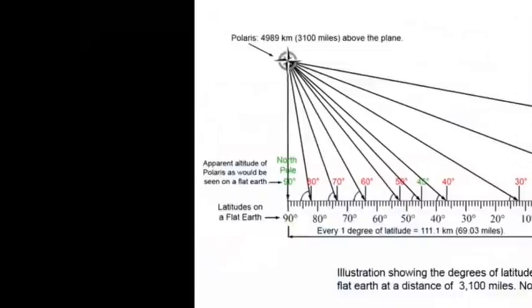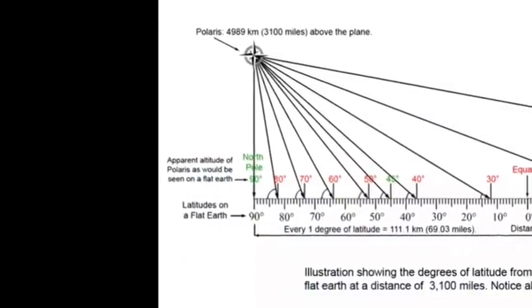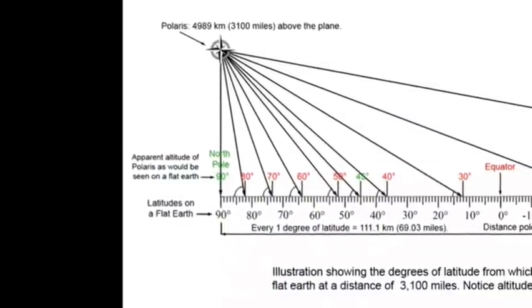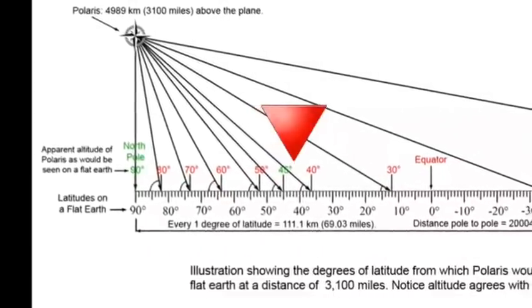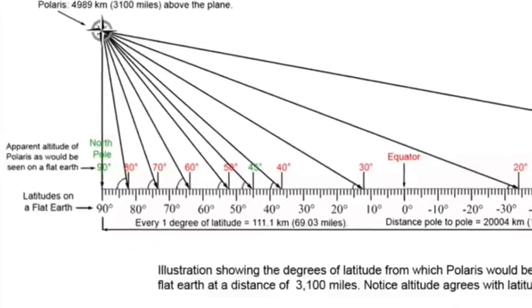Basic trigonometry reveals why. You can verify this for yourself. In this illustration, which is drawn to scale, you can see that Polaris, if positioned at a height of 3,100 miles above a flat Earth, will have the correct matching altitude from 45 degrees north latitude, but not from anywhere else except the North Pole.